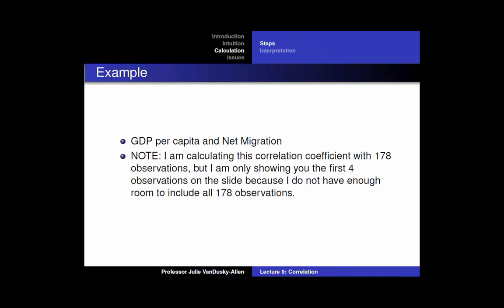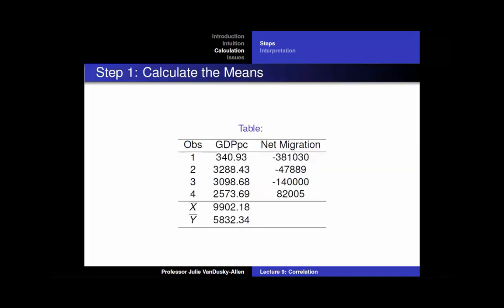Now I am going to show you how to calculate a correlation coefficient. I will use data from the beginning of the lecture that measures GDP per capita and net migration of individual countries. Note that I am only going to show you 4 observations in the slides, but I used a total of 178 observations in this analysis. What you need to do is calculate the mean of x and the mean of y — as with the rest of the calculations, I did this for all 178 observations.